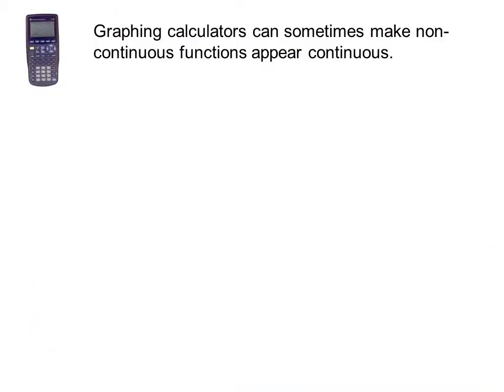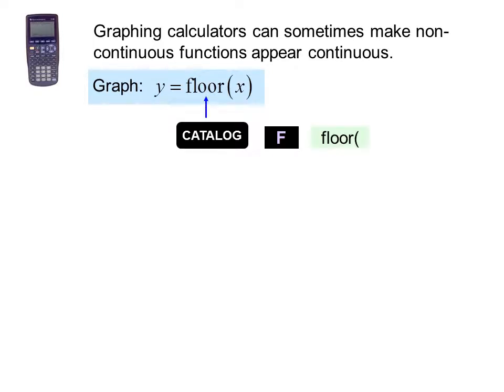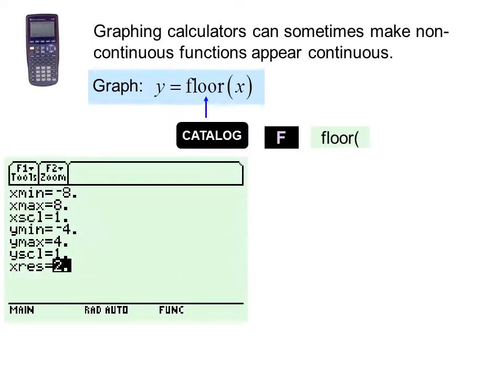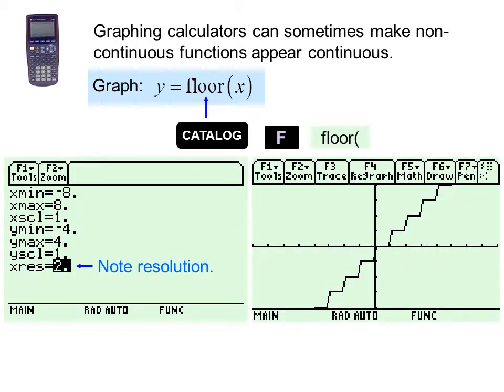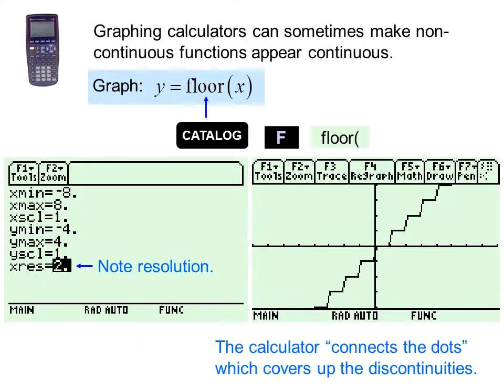Graphing calculators can sometimes make non-continuous functions appear continuous. Graph y equals floor x. And we set the resolution to 2. Now this example is graphed on the classic TI-89. You cannot change the resolution on the titanium edition. So the old TI-89 connected the dots so it looked like a continuous function. It covers up the discontinuities.